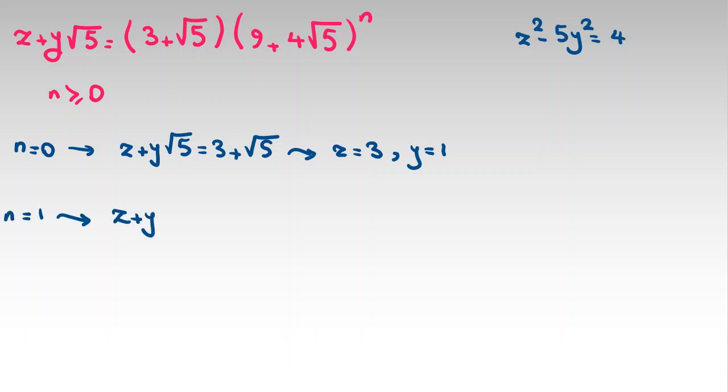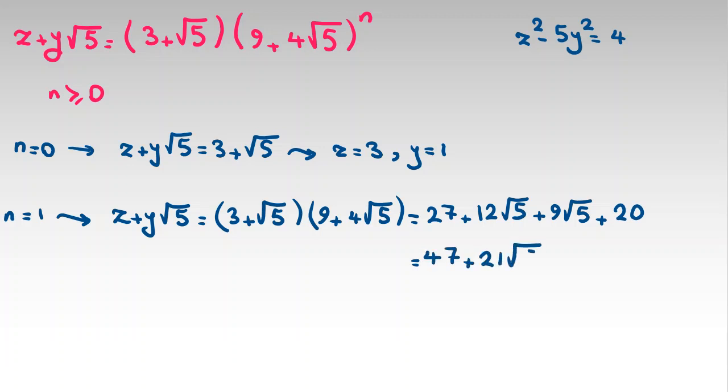If n = 1, z + y√5 = (3 + √5)(9 + 4√5). If you multiply, 3 times 9 is 27, 3 times 4√5 is 12√5, √5 times 9 is 9√5, and 4√5 times this will be 4 times 5 = 20. So it will be 20 + 27 = 47 + 21√5. In this case, z will be 47 and y will be 21. It is our second answer.